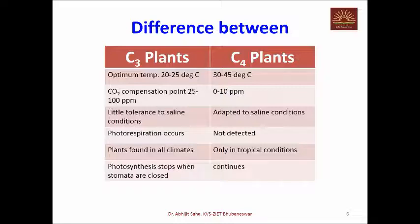One very important aspect is the first stable product: carbon dioxide is accepted by phosphoenolpyruvate in C4 plants, whereas it is RuBP in C3 plants. Also, the transpiration ratio is much higher in C3 plants and much lower in C4 plants. Like this, we can make out some differences between C3 plants and C4 plants.